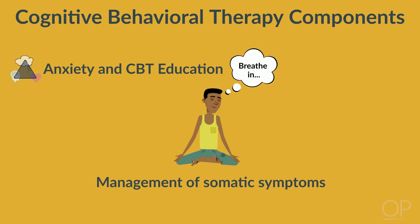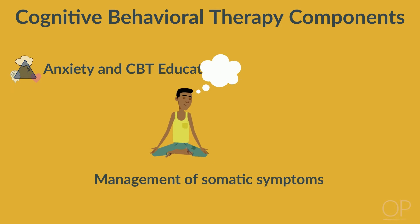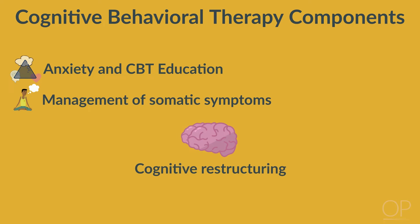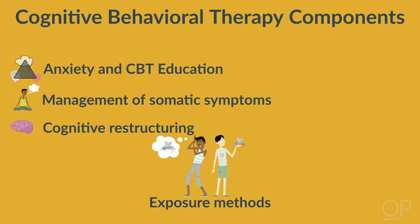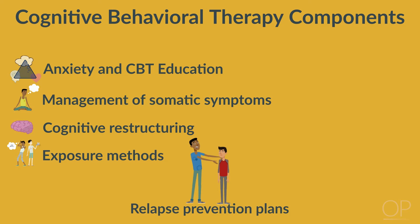Second, skills for managing somatic symptoms such as relaxation techniques, diaphragmatic breathing, and self-monitoring. Third, cognitive restructuring — for example, challenging negative expectations and changing negative self-talk. Fourth, exposure methods from imagining to graded desensitization. And fifth, relapse prevention plans such as planning for booster sessions with the therapist or by coordinating with schools.